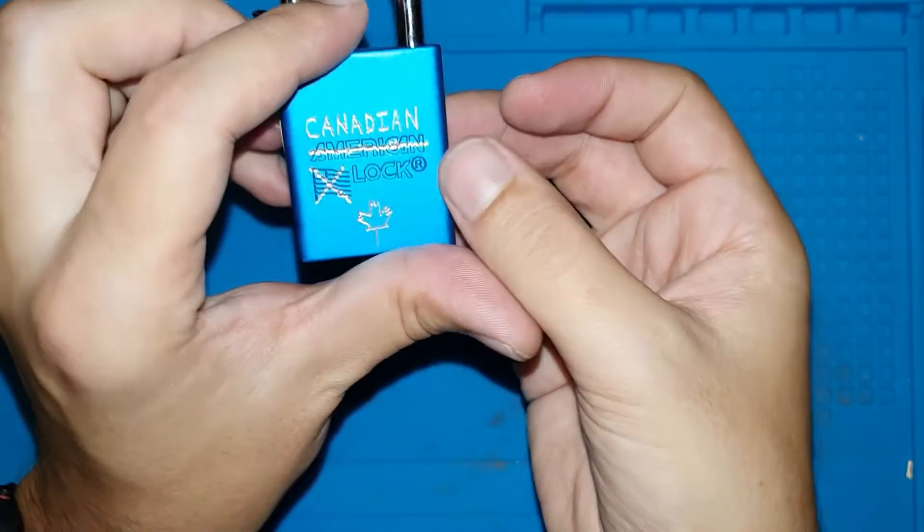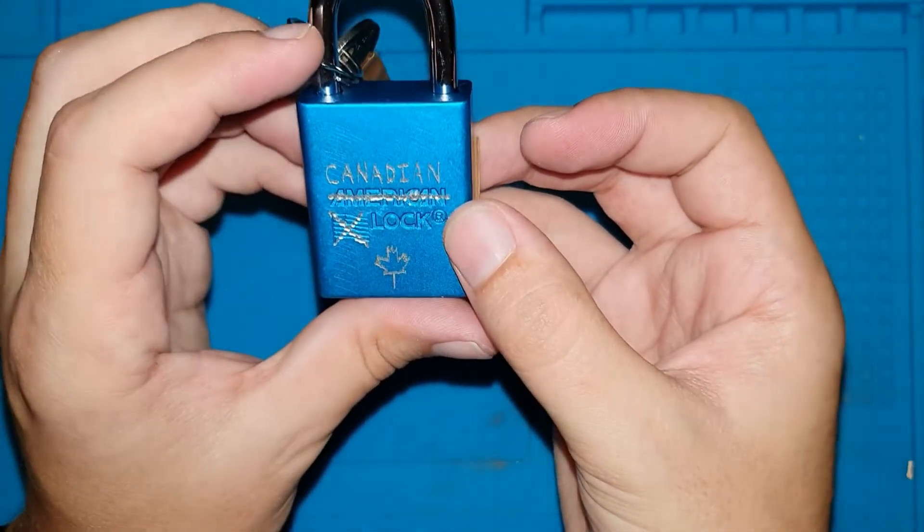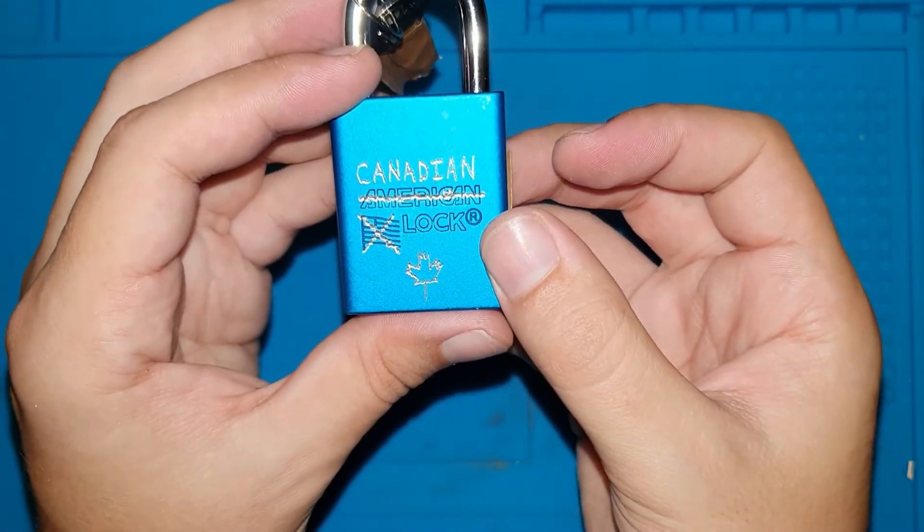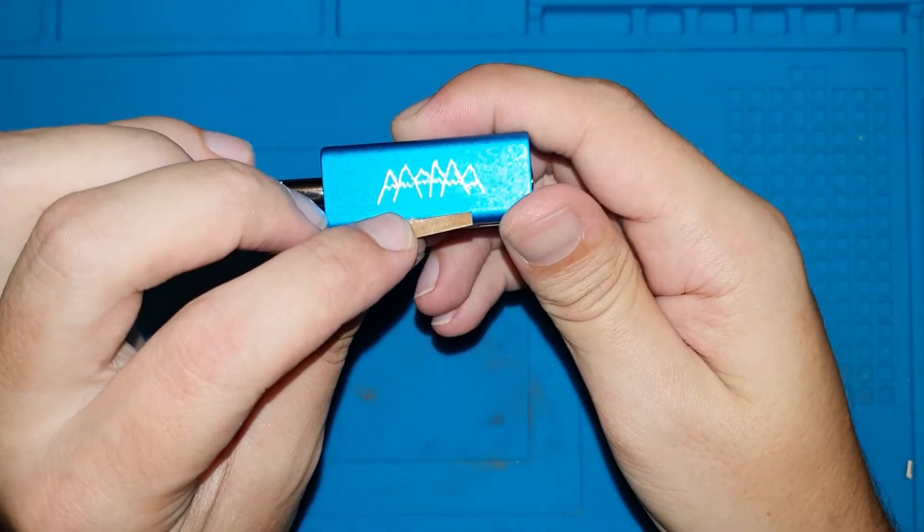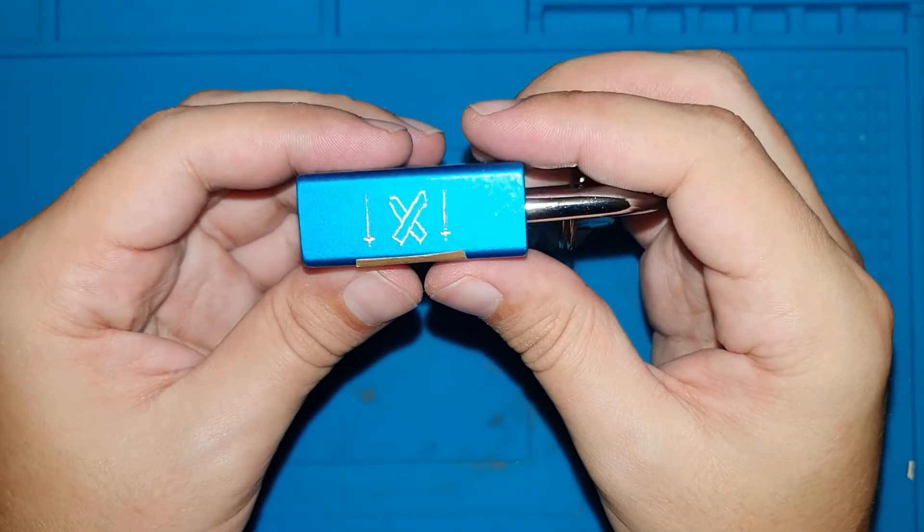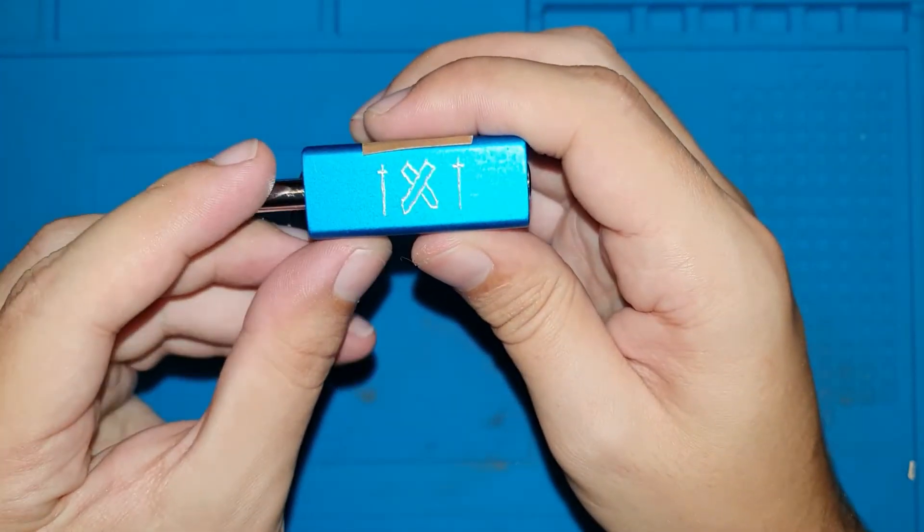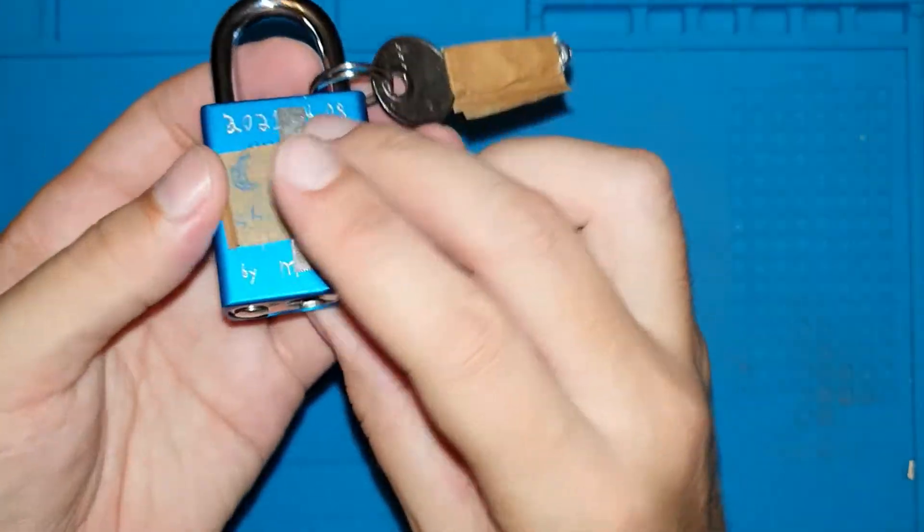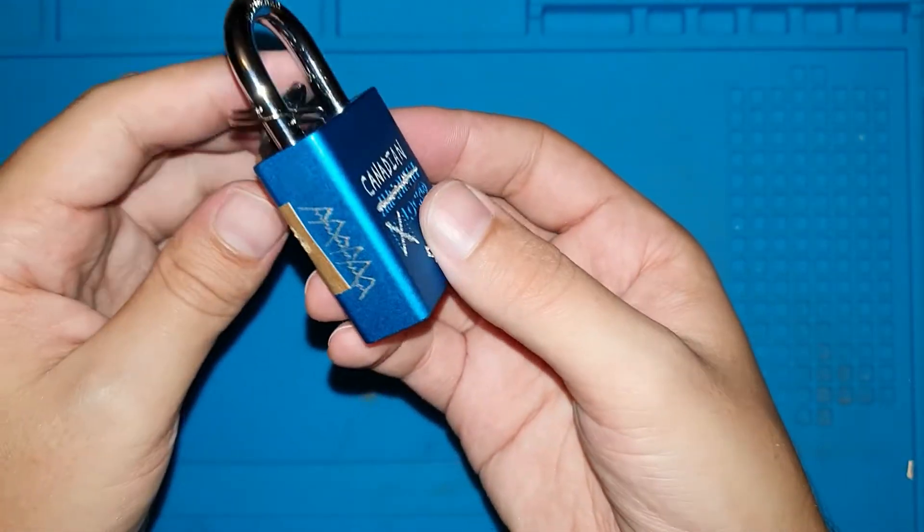It's a Canadian lock, so obviously he used the American lock and changed it to Canadian lock, so it's very cool. He made his mountains and this should be probably the skis like this. Yeah, so very cool and nice drawing and I'm going to try to pick it.